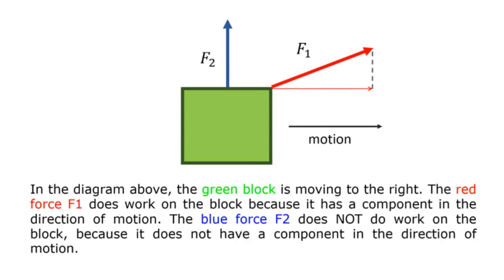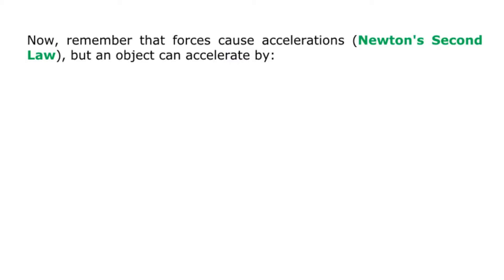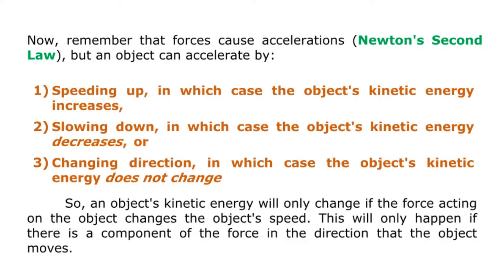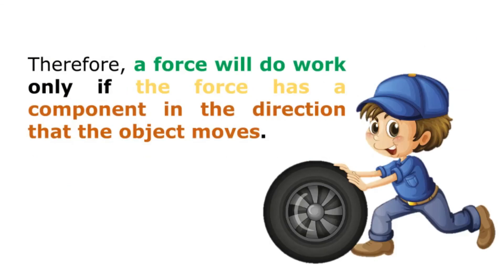Forces cause accelerations by Newton's second law, but an object can accelerate in different ways: first, by speeding up, in which case the object's kinetic energy increases; second, by slowing down, in which case the object's kinetic energy decreases; or third, by changing direction, in which case the object's kinetic energy does not change. So an object's kinetic energy will only change if the force acting on it changes the object's speed. This will only happen if there is a component of the force in the direction that the object moves. Therefore, a force will do work only if it has a component in the direction that the object moves.